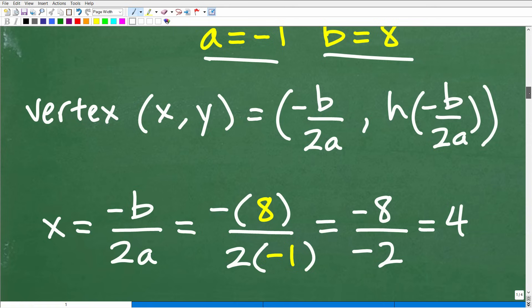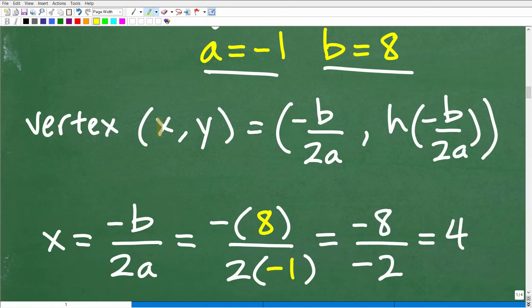So a is equal to negative one and b is equal to eight. Now all we have to do is just plug in these respective values. The x coordinate, or the t coordinate for the vertex, is minus b over 2a. So minus b, again b is 8, so I'll plug in 8 right there, over 2 times a, a is negative 1. So we end up with negative 8 over negative 2, and of course that's going to be a positive 4.